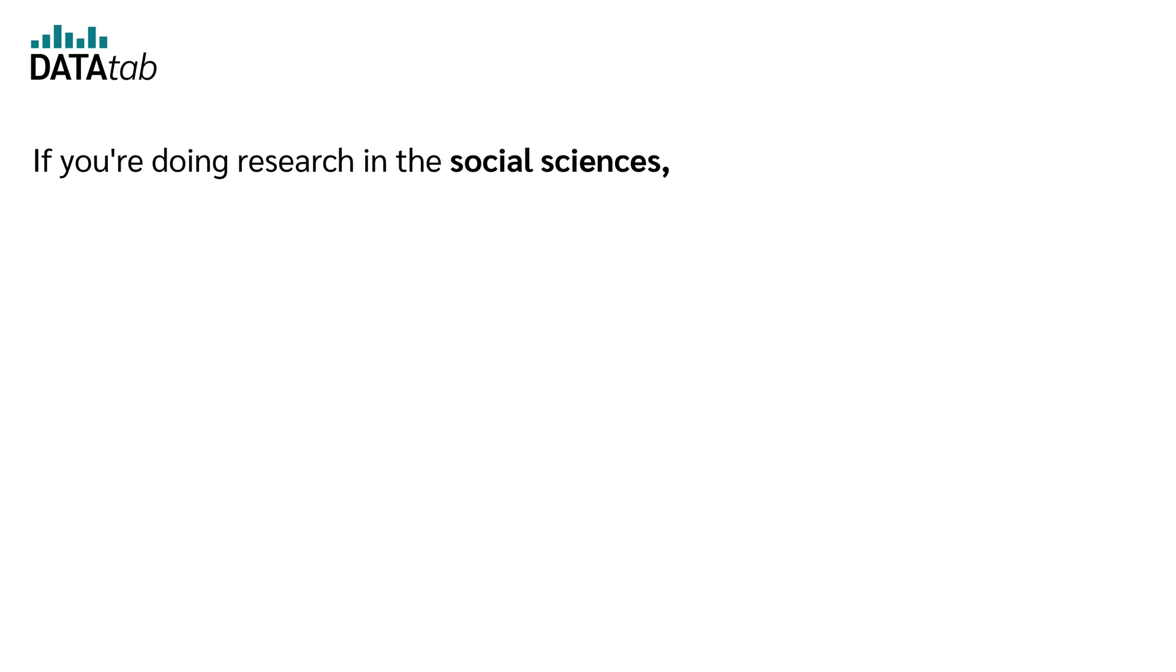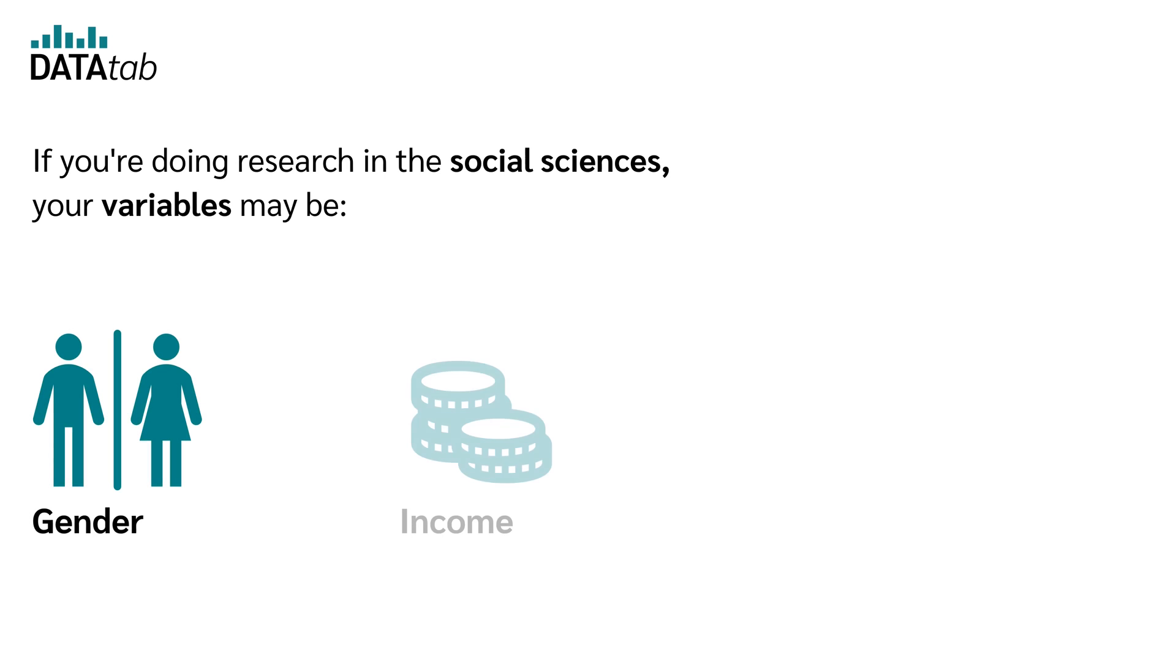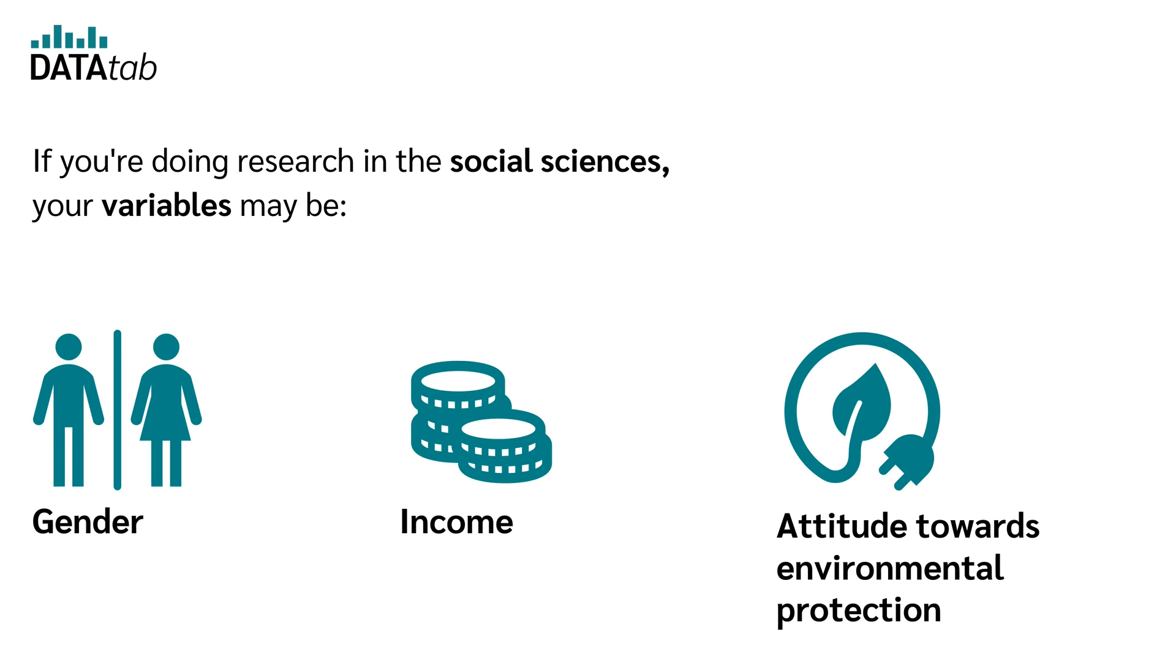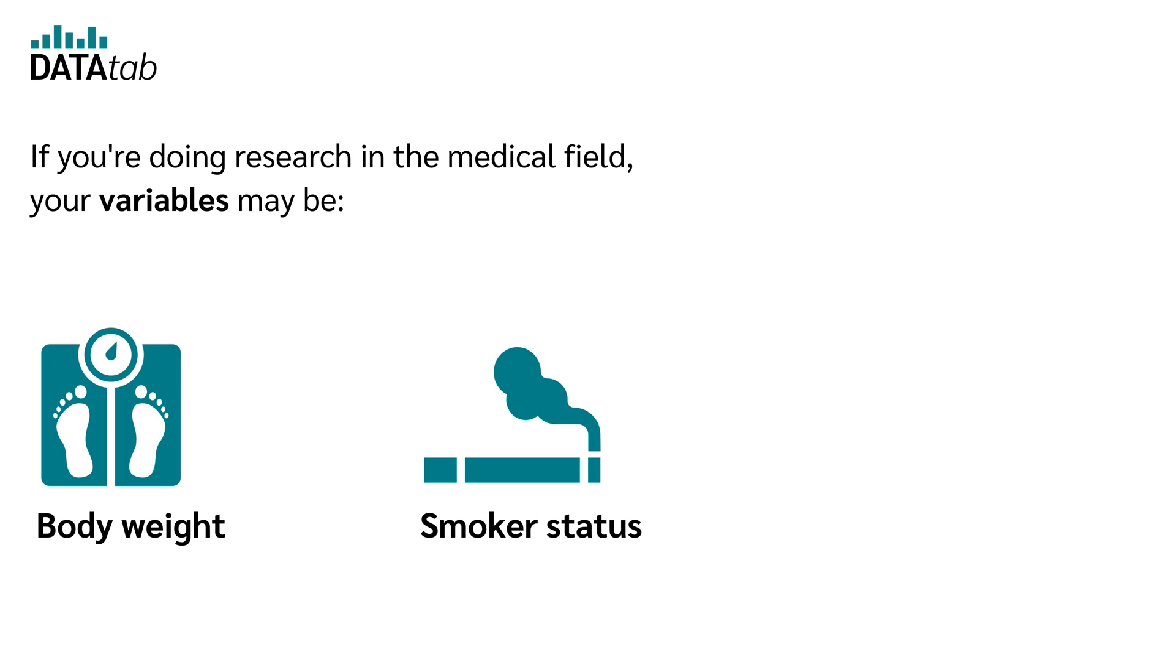If you're doing research in the social sciences, your variables may be gender, income, or attitude towards environmental protection. If you're doing research in the medical field, your variables may be body weight, smoker status, heart rate.